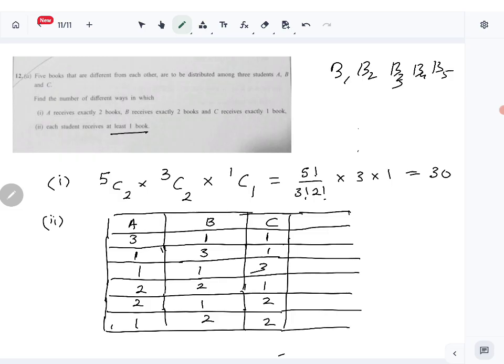So the first case is 5C3 times 2C1 times 1C1. That is equal to what? 5C3 is 10, times 2, times 1, equals 20. Same thing for the other two cases - also 20.